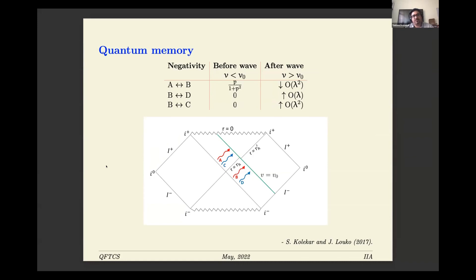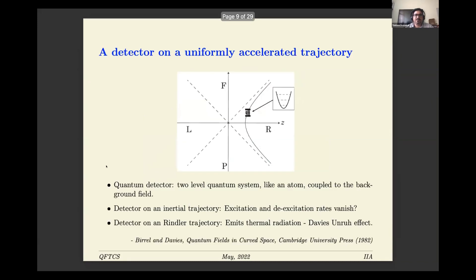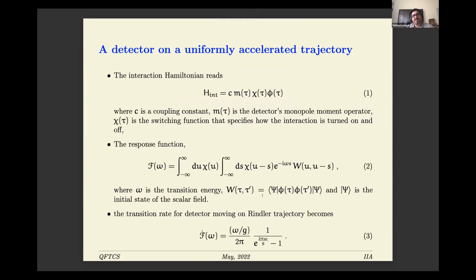The other interesting question is how soft theorems, soft photons, or soft gravitons play a part. Consider a detector: we are familiar with the Unruh effect — a detector moving in Minkowski vacuum with uniform acceleration sees thermal radiation. But now, can we ask how this detector interacts with soft particles in the background scalar field, and what is the effect of soft particles on the transition, excitation, or de-excitation rates? For this purpose we need to build a detector sensitive to soft particles in the background.